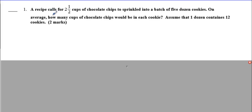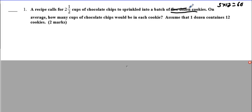Let's look at this example. It states that a recipe calls for 2 and a half cups of chocolate chips to be sprinkled into a batch of 5 dozen cookies. On average, how many cups of chocolate chips would be in each cookie? Assume that a dozen contains 12 cookies. We know that 5 dozens is going to be 12 times 5, which equals 60 cookies. So I'm going to replace '5 dozen' with 60 to make it simpler.